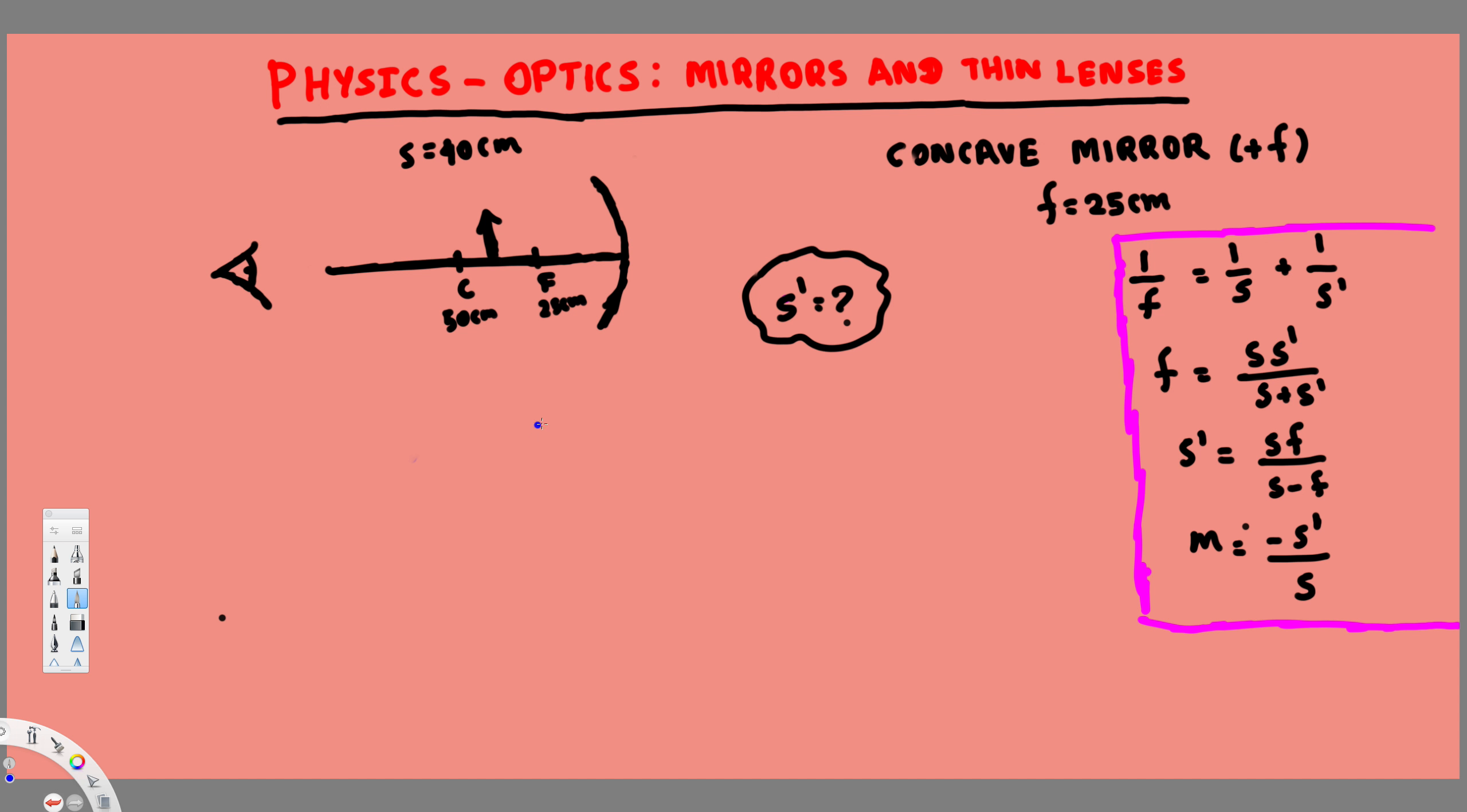In order to find this, first we have to draw the rays. The first ray we draw parallel to the normal, and this is going to pass through the focal point. The second ray we draw through the focal point, and this is going to pass through this. So the image is going to be like this.